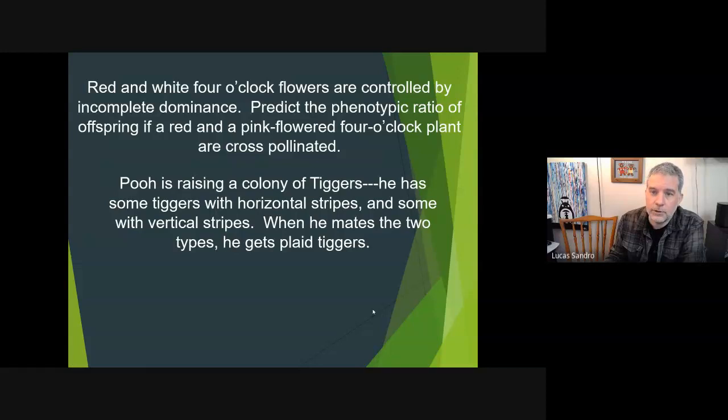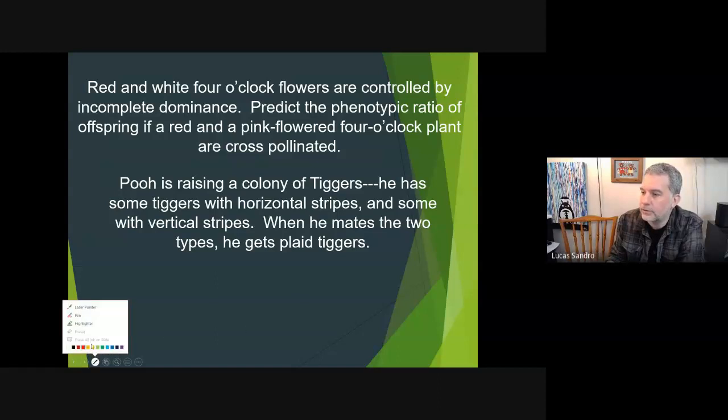This is one you're going to have to recognize. If you see two phenotypes blending to create an in-between phenotype - if tall plus short equals medium size, if horizontal plus vertical equals plaid - your brain needs to say that's incomplete dominance. So we need to pick a letter.